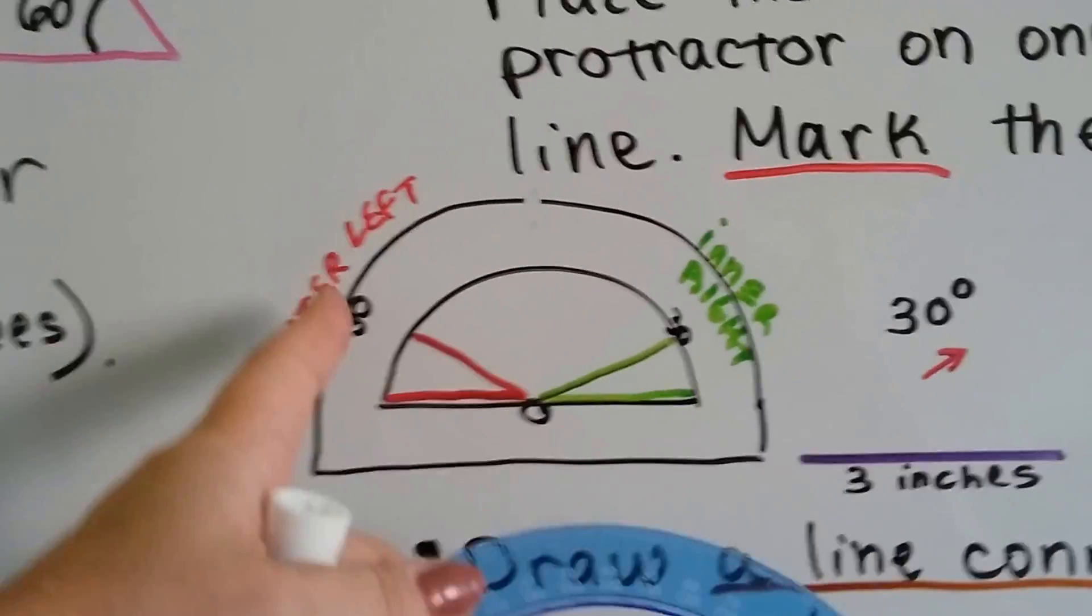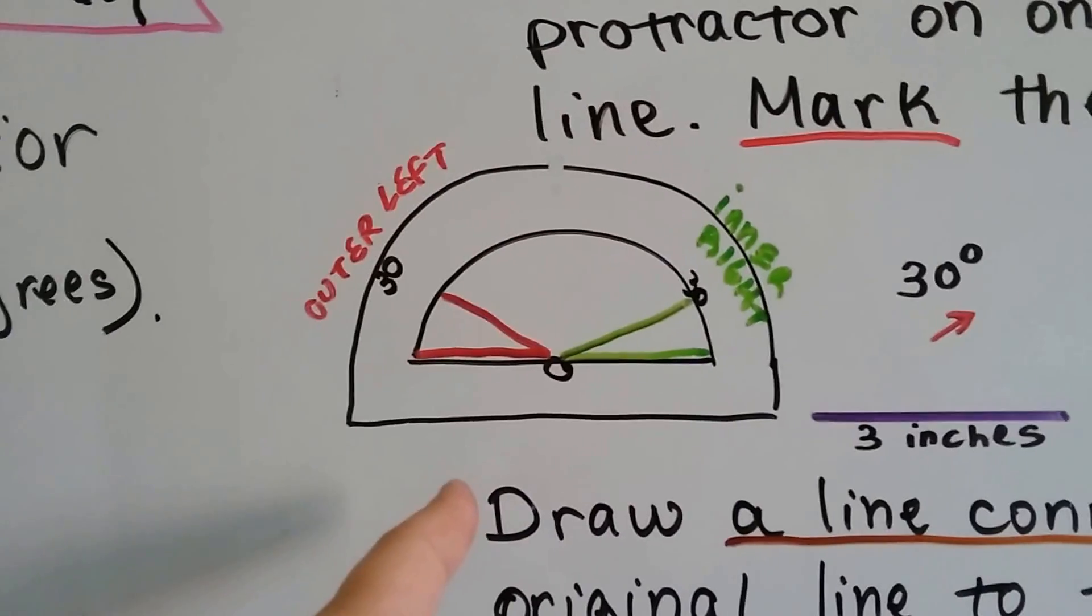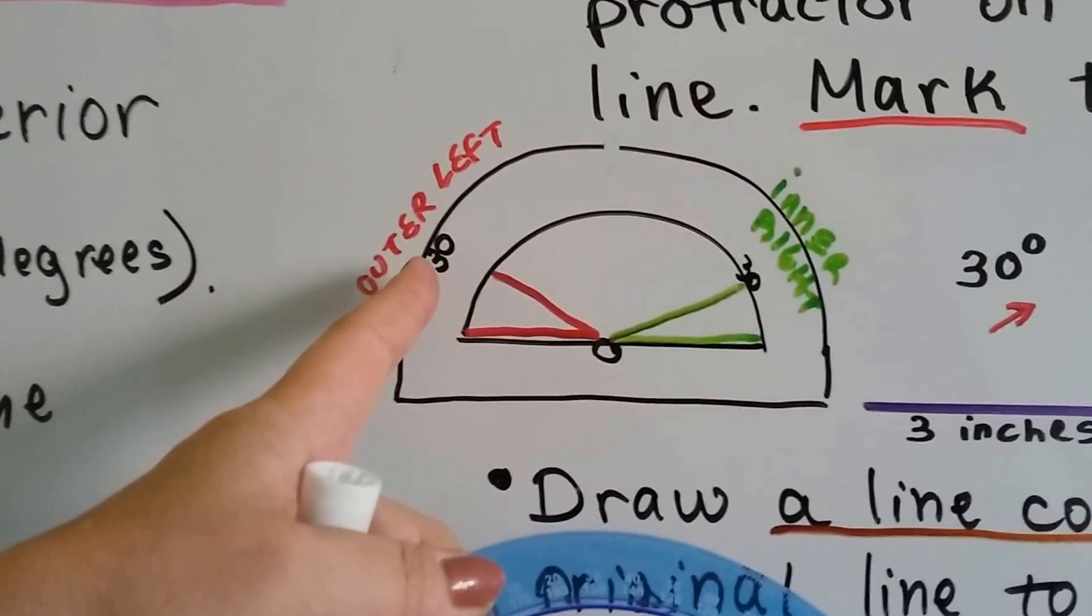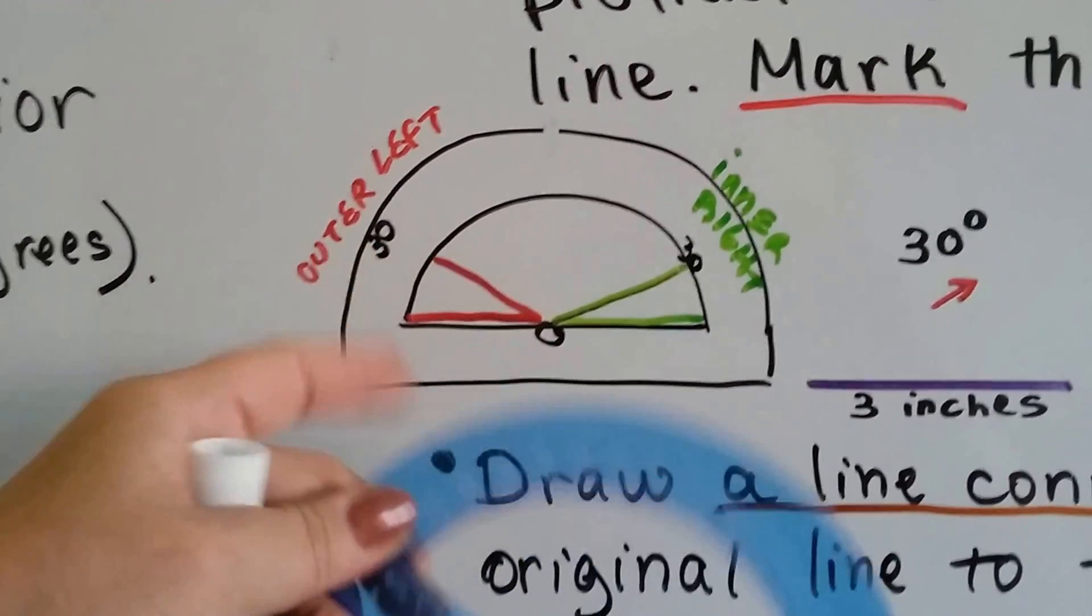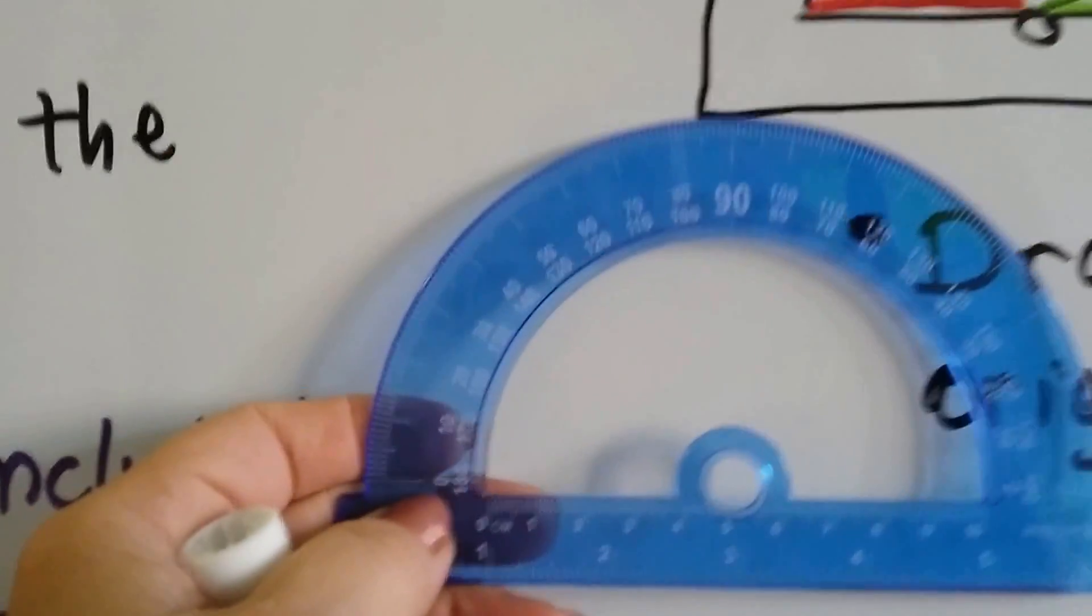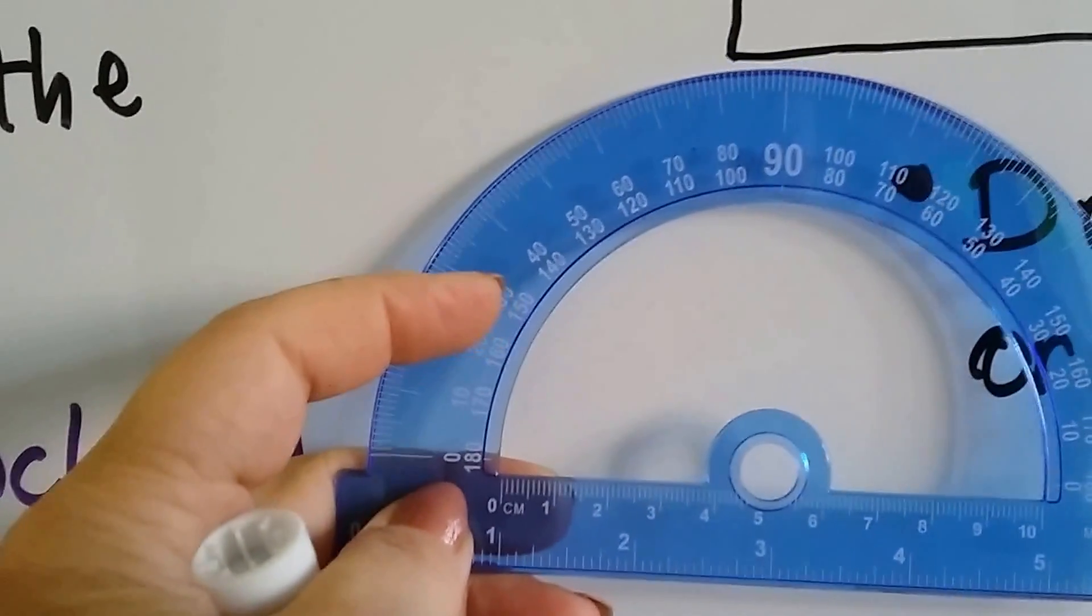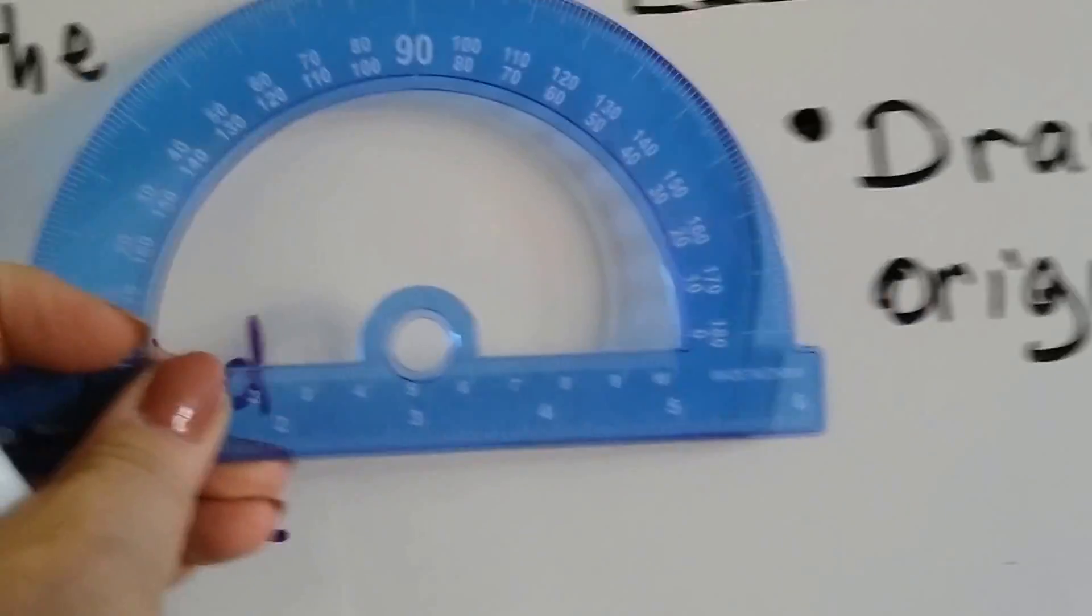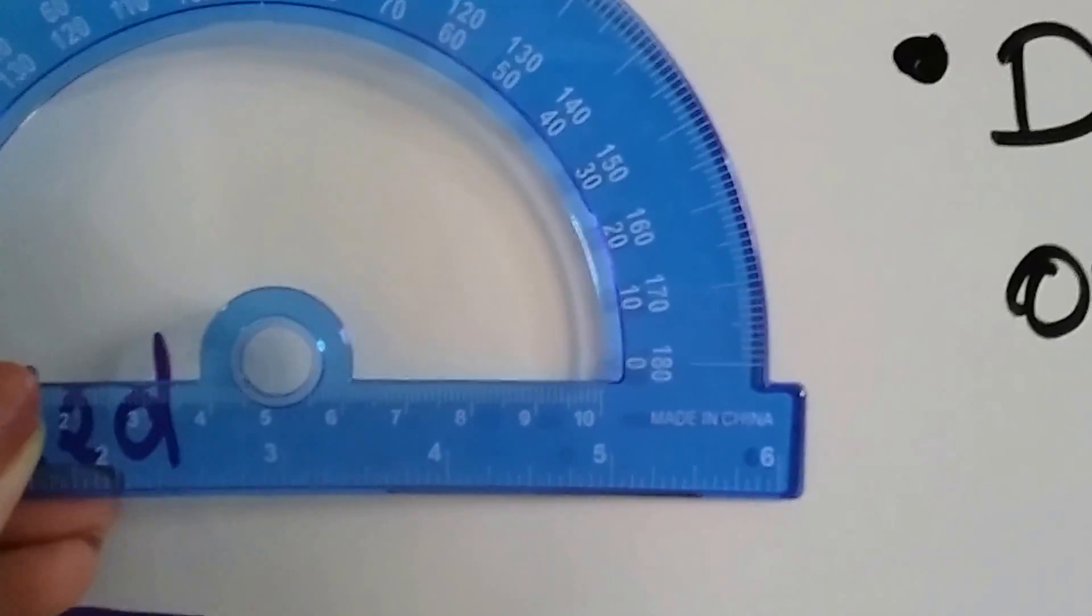Well, the reason that you've got some on the outside and some on the inside is, if your angle is going to open to the left, then you use the outside measures. Can you see the outside measures and the inside measures? The outside ones are small on this side and the inside ones are small on this side.